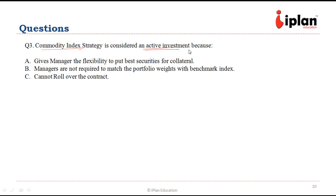Let us look at question number three. The commodity index strategy is considered an active investment because—we have already seen the reasons—A gives manager the flexibility to put best securities for collateral. That is right.